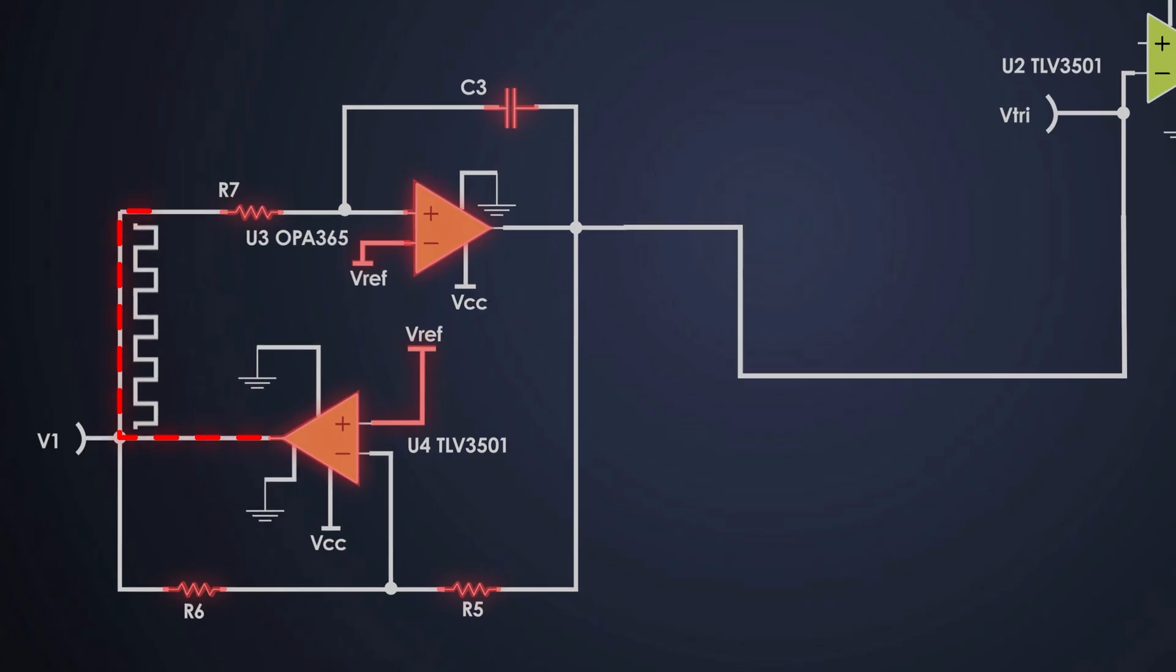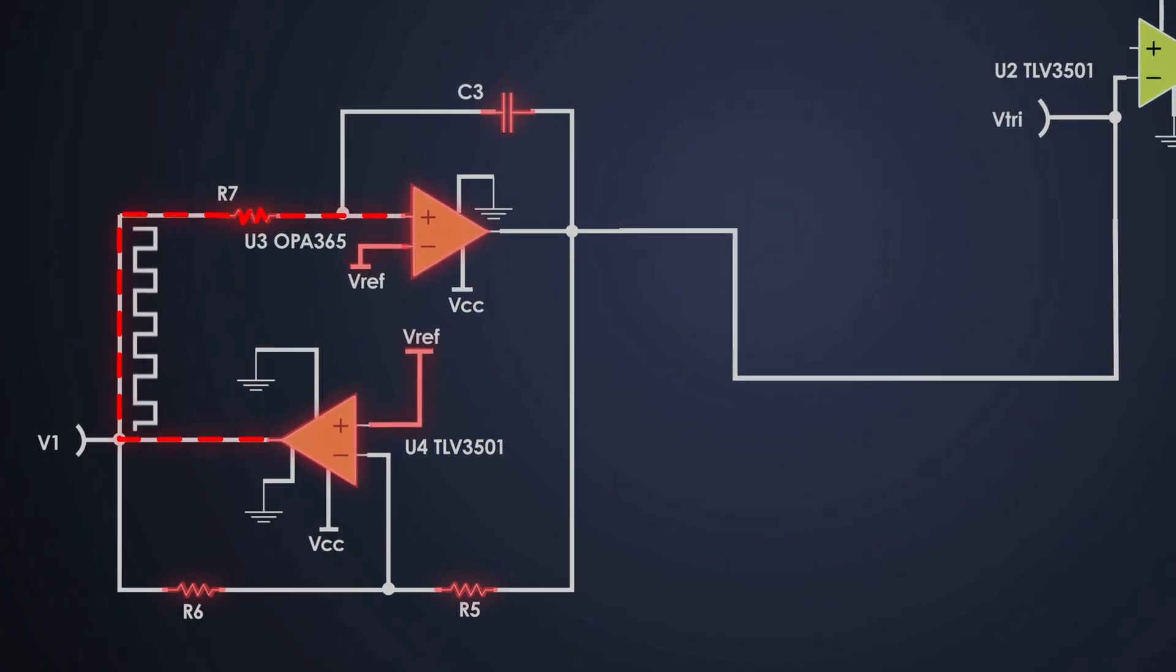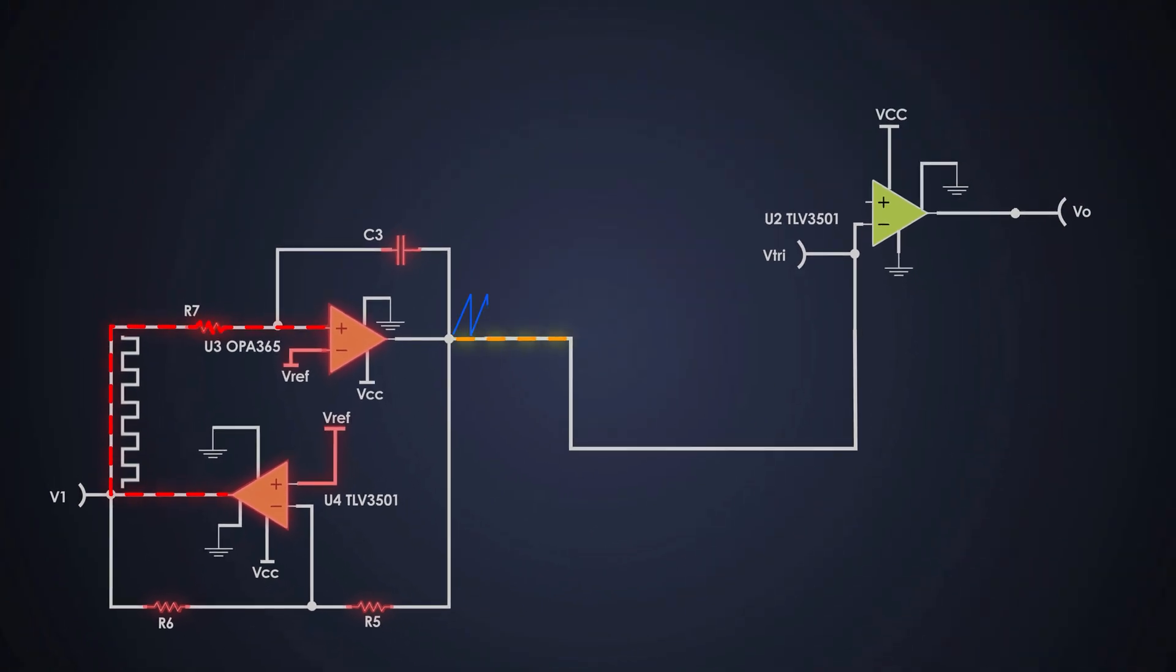U4 compares the output of U3 to VREF and flips its output accordingly. This toggling is fed back to the integrator U3 which starts ramping up or down based on the polarity. The result is a triangular wave.